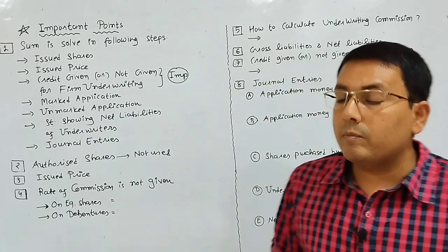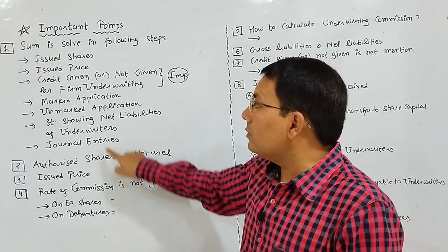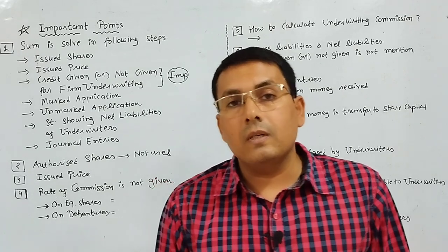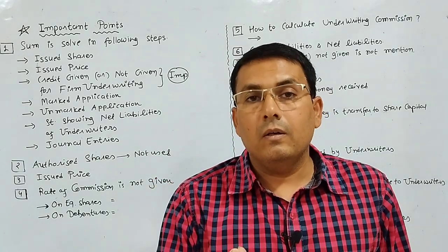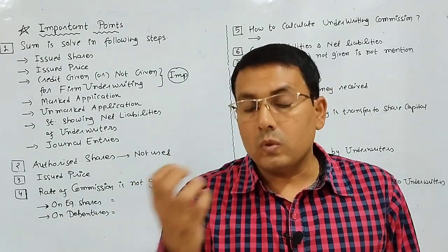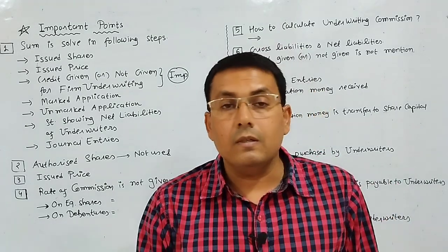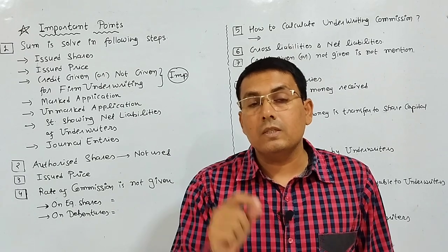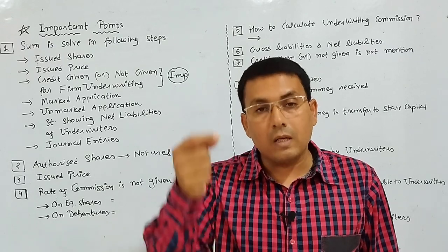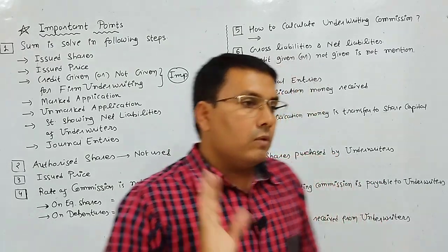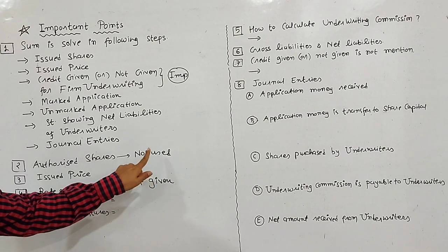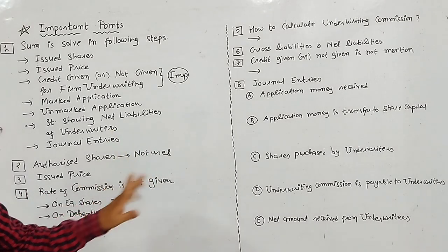What do we do with authorized shares? We use them to find the issued shares. For example, if a company's authorized shares are 1 lakh and the company issued 60% of shares to the public, then 1 lakh × 60% = 60,000 shares. These 60,000 are the issued shares, and all further underwriting commission working is based on these. The authorized shares are never written anywhere in the sum.